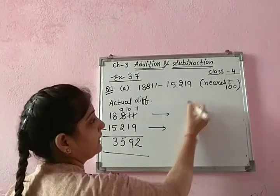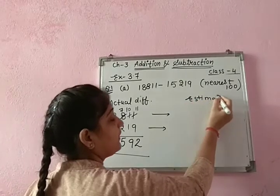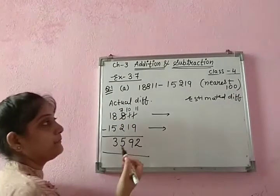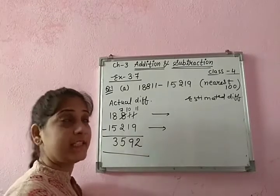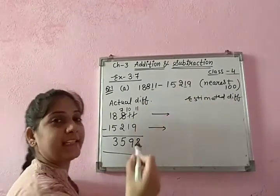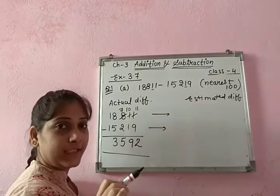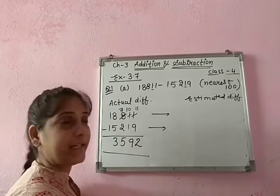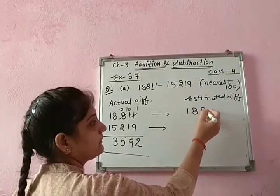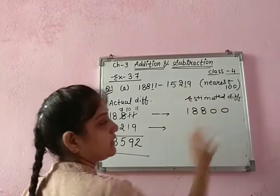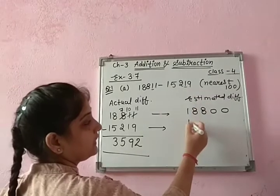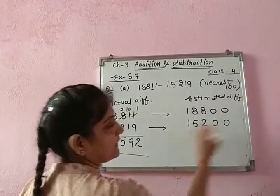Now find the estimated difference to nearest 100. For rounding to 100, we look at the tens digit. If it is 5 or greater, add 1 to the hundreds place; if less, keep as is. For 18,811, the tens digit is 1 — smaller than 5 — so it stays as 18,800. For 15,219, the tens digit is 1 — also smaller than 5 — so it becomes 15,200.